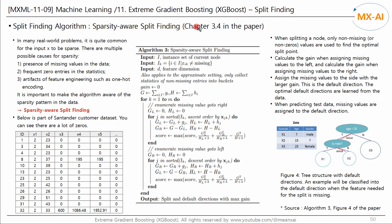Let's take a look at section 3.4 of the XGBoost paper. In many real-world problems, it is quite common for the input X to be sparse. There are multiple possible causes for sparsity. The first is that there are missing values in the data. The second is there are frequent zero entries in the statistics. The third is there are artifacts of feature engineering, such as one-hot encoding. It is important to make the algorithm aware of the sparsity pattern in the data.